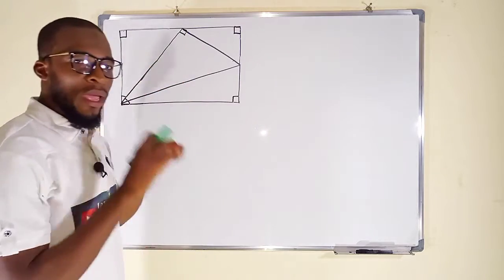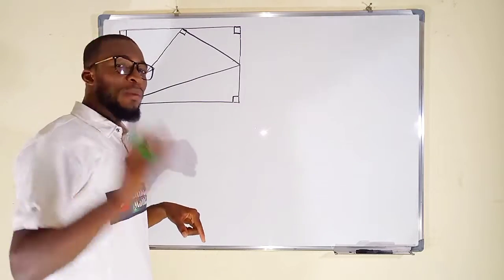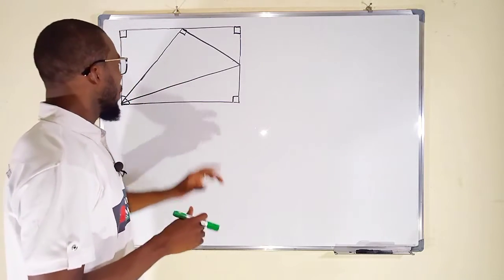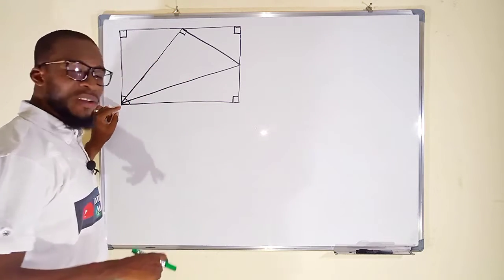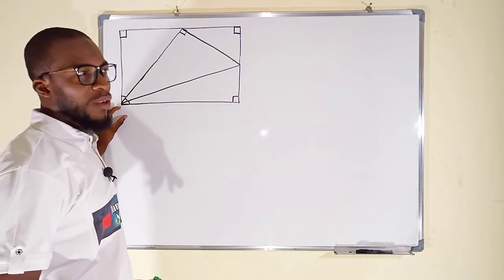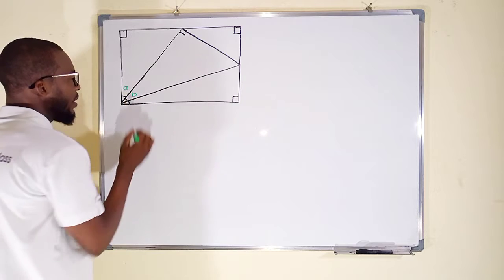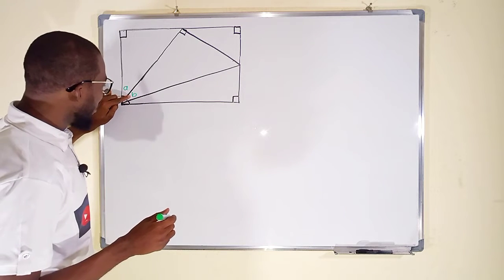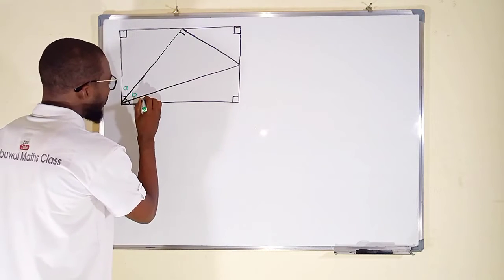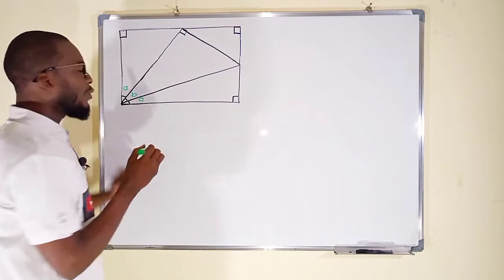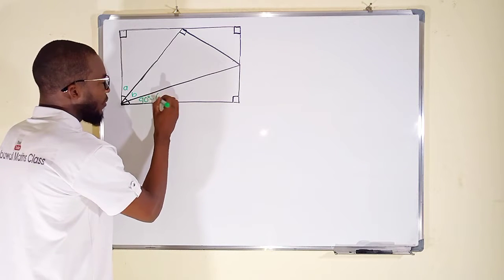Now let us label the diagram. What you're seeing here is a right angle triangle enclosed in a rectangle, and a rectangle has all its vertices equal to 90 degrees. One vertex of this right angle triangle lies on a right angle of this rectangle. Let us label this place as A and B. This angle can be written as 90 degrees minus the sum of A plus B.